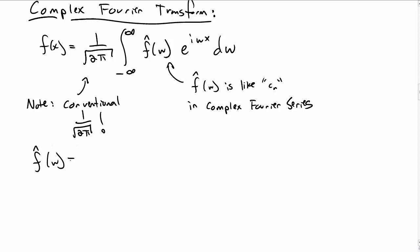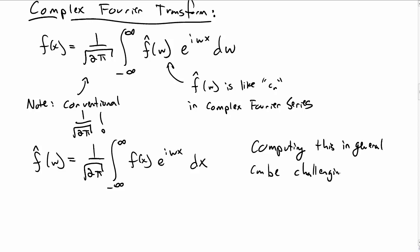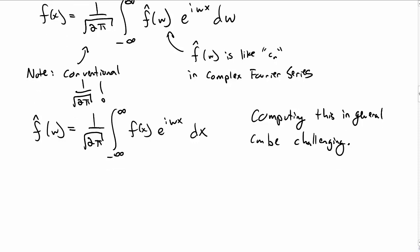We can compute these coefficients by a similar-looking integral. So you do an integral from negative infinity to infinity, f of x, e to the i w x dx. And, as with the other Fourier transforms, computing this, in general, is not particularly easy. And so you generally just look it up in a computer or in a table.